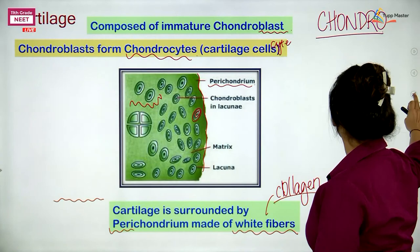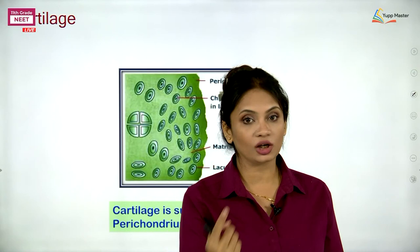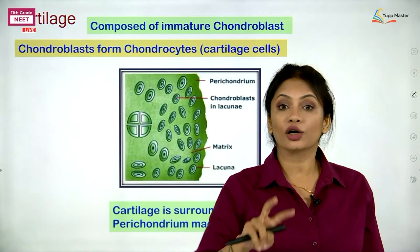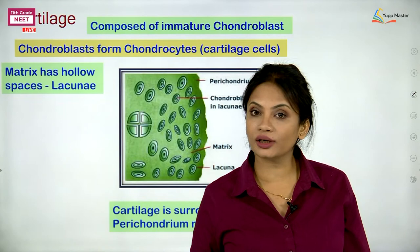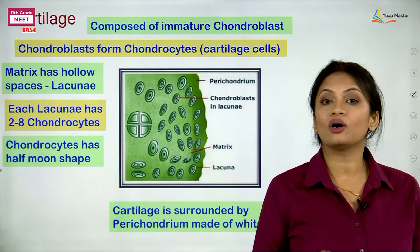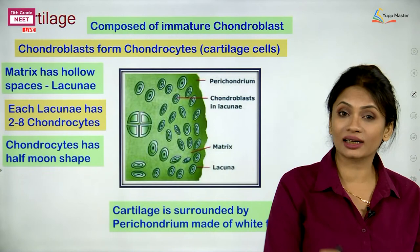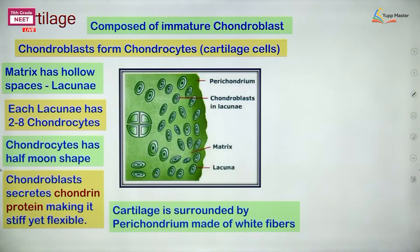Let us remember the key points on cartilage: First, cartilage is surrounded by white fibres called the perichondrium. Immature cartilage cells are chondroblasts; they mature to form chondrocytes. Chondrocytes are in spaces called lacunae, with 2 to 8 cells per lacuna, and they are half-moon shaped. The word chondro is used because of the chondrin protein secreted by the chondroblasts.